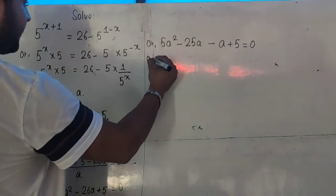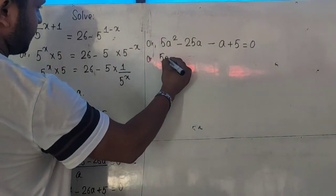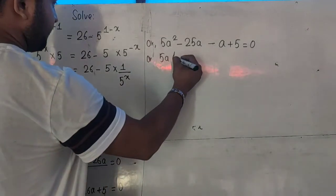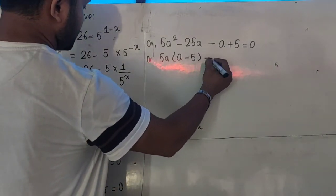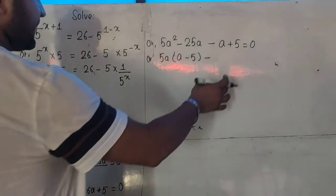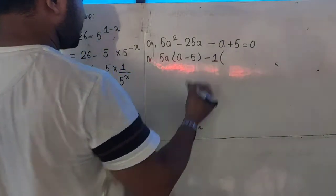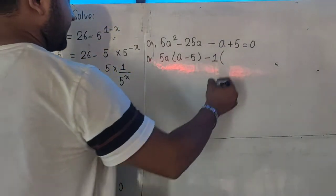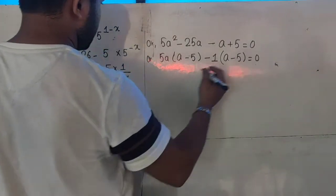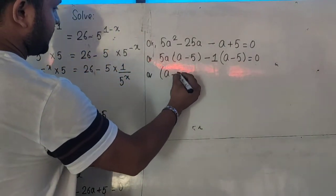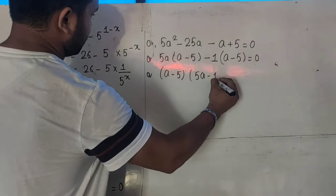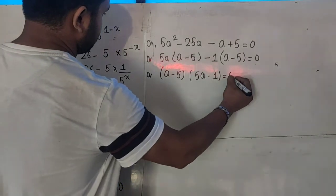Taking 5a common from the first two terms gives 5a(a - 5), and taking minus 1 common from the last two terms gives -1(a - 5). So the expression becomes (a - 5)(5a - 1) = 0.